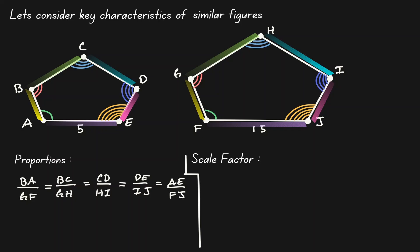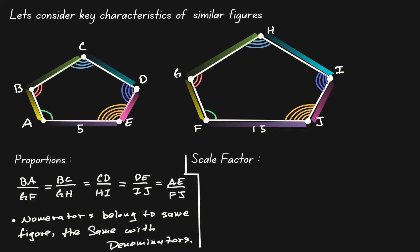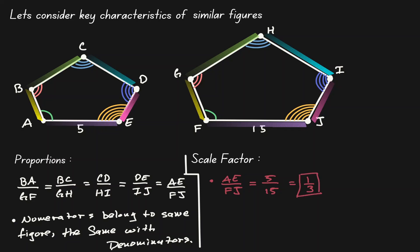This is what we define as the proportions of two similar polygons. When defining these proportions, one key thing to keep in mind: all the line segments in the numerator belong to the same figure, and all line segments in the denominator belong to the same figure. Notice that all the numerator segments belong to the figure on the left, and all denominator segments belong to the figure on the right. Since all these fractions are equivalent, let's choose two sides we have information on — AE and FJ. AE has a length of 5, and FJ has a length of 15, giving us 5 over 15, which simplifies to one third. This value is what we define as the scale factor.